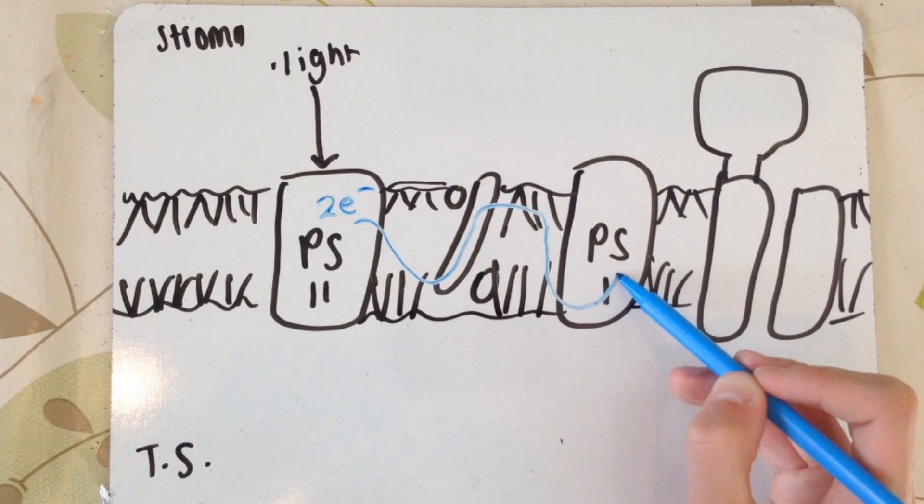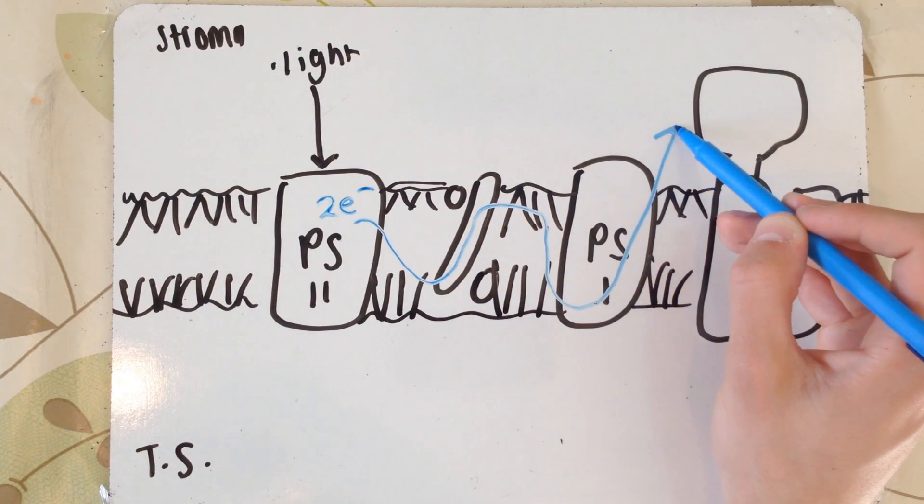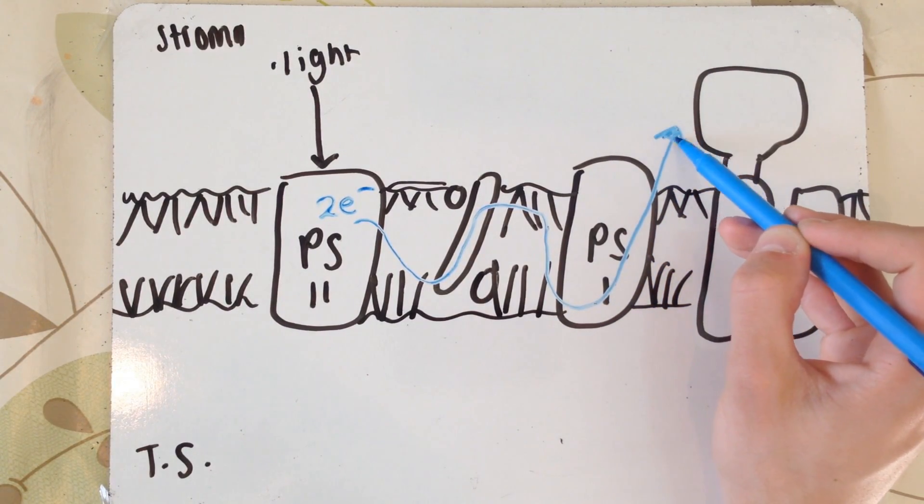Light is actually hitting photosystem 1 at the same time. This causes the electrons to leave photosystem 1. These electrons are then replaced by photosystem 2, the electrons that came from photosystem 2 when that was struck by light. The electrons from PS1 travel up to here, and I'm about to show you why and where they go in a moment.